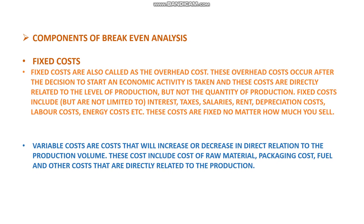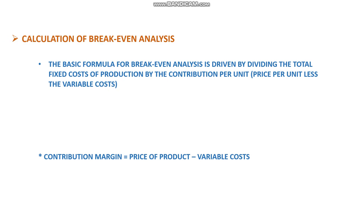The second cost on which break-even analysis depends is variable cost. Variable costs are costs that will increase or decrease in direct relation to the production volume. These costs include raw material cost, packaging cost, freight cost, transportation costs, and other costs directly related to production. If production is more, your variable cost will be more, and if production is less, your variable cost will be less.